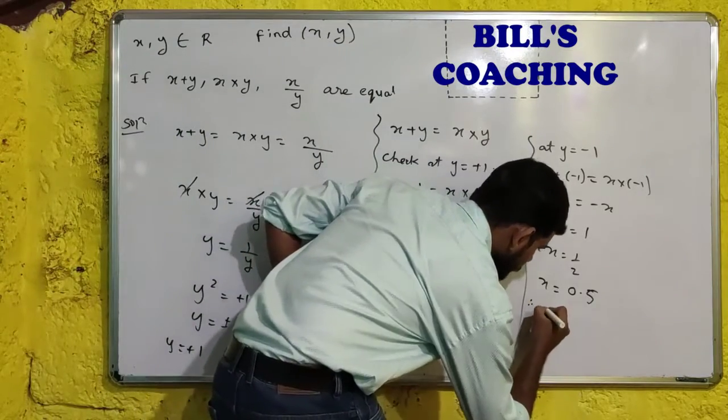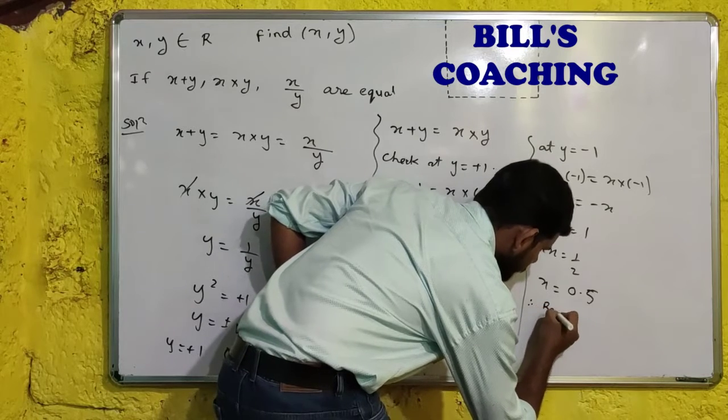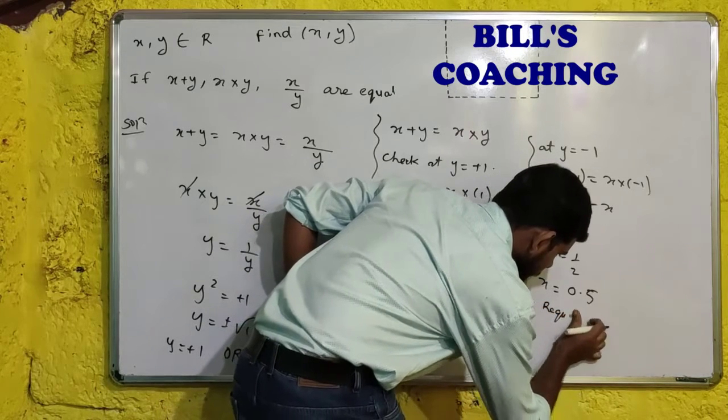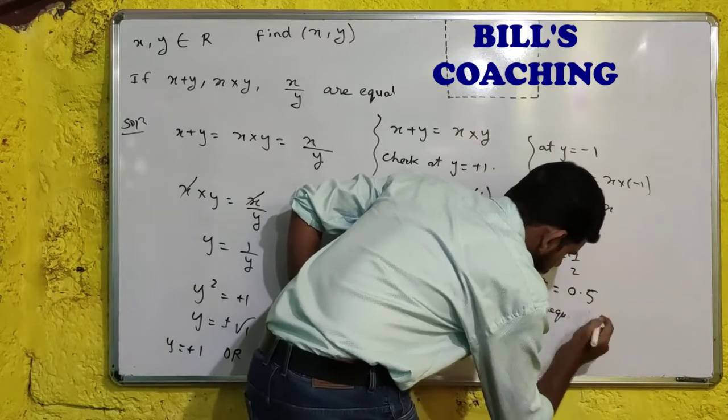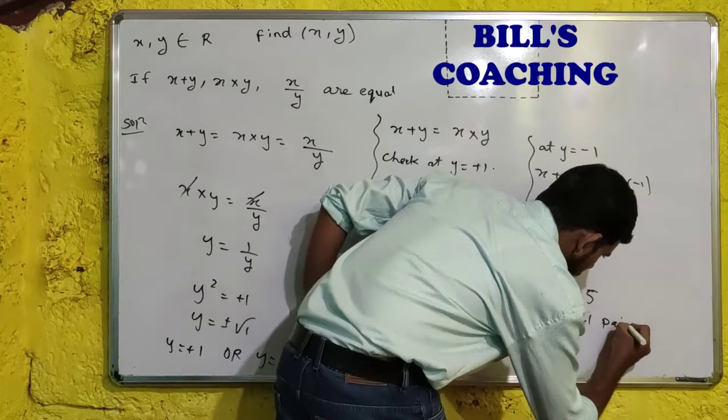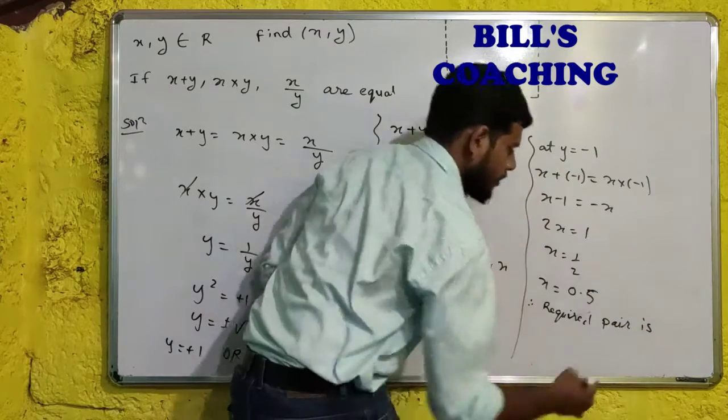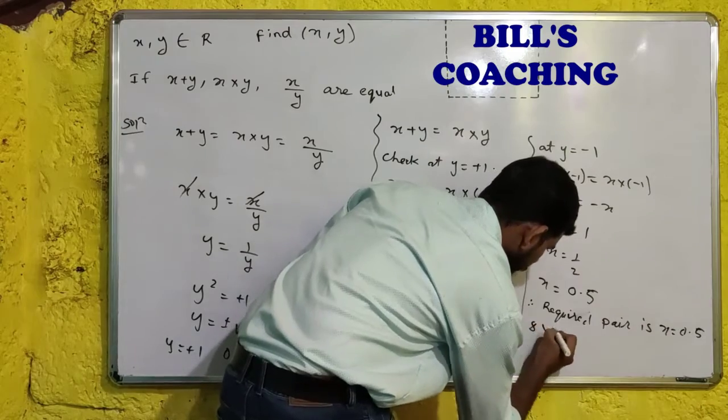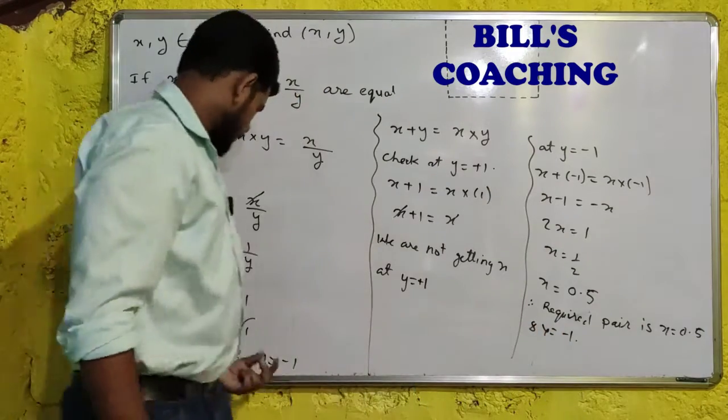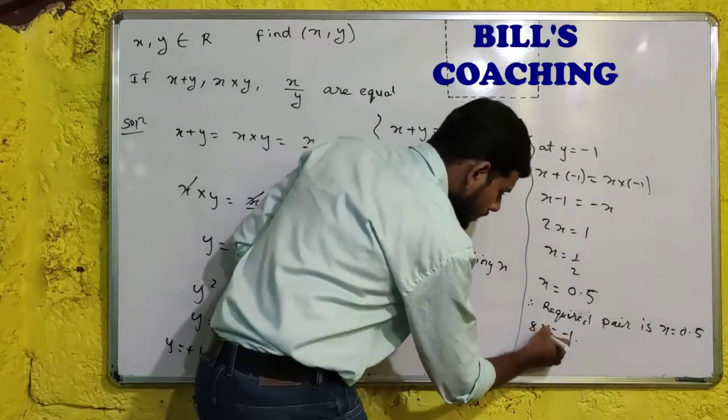So we got value of minus 1. And therefore, required pair is x is equal to 0.5 and y is equal to minus 1.